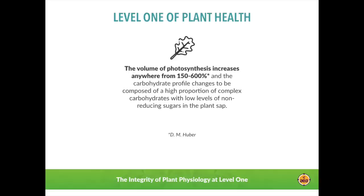At level one, what we're observing is that the volume of photosynthesis increases. It's possible to measure photosynthetic capacity in a lab, but based on conversations with plant biochemists and physiologists, there seems to be a growing consensus that what we've come to accept as normal is plants photosynthesizing at only about 20 to 25% of their inherent genetic capacity. There is the potential for greatly increased photosynthetic volume when plants are supported with the right nutrition and all the needed enzyme cofactors.